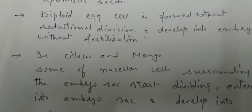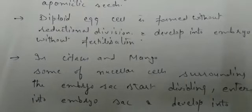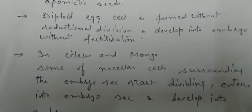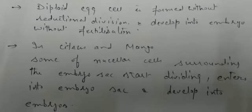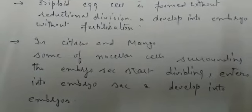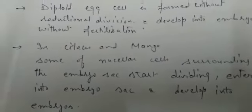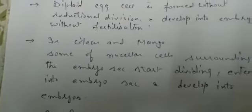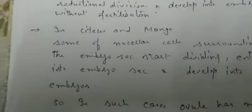Now, in the case of citrus and mango — you know that the nucellus is the tissue surrounding the embryo. In citrus and mango, some of the nucellus cells surrounding the embryo will protrude or push into the embryo sac, and these cells also develop into embryos.